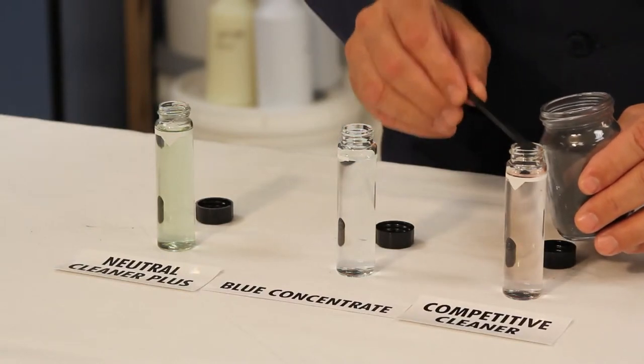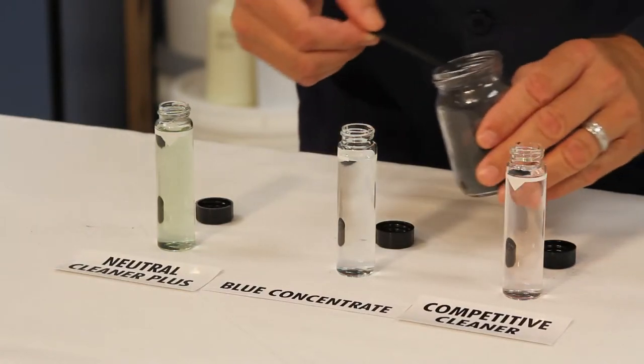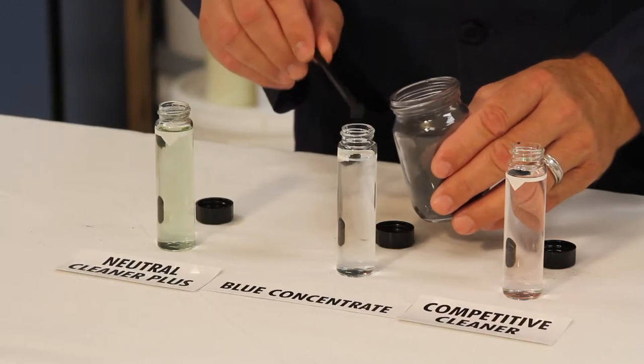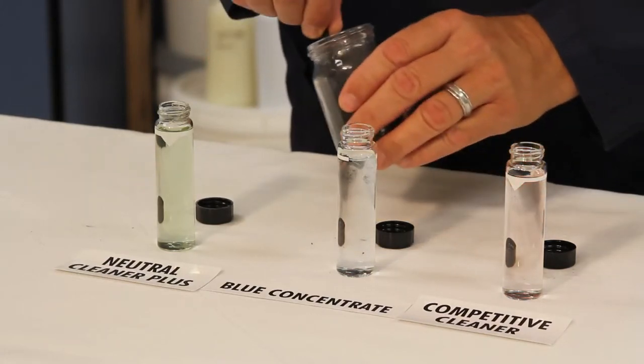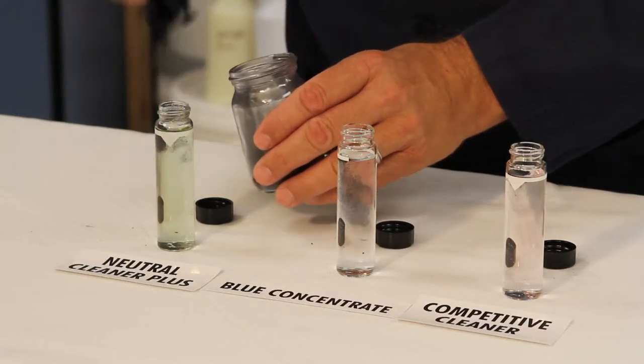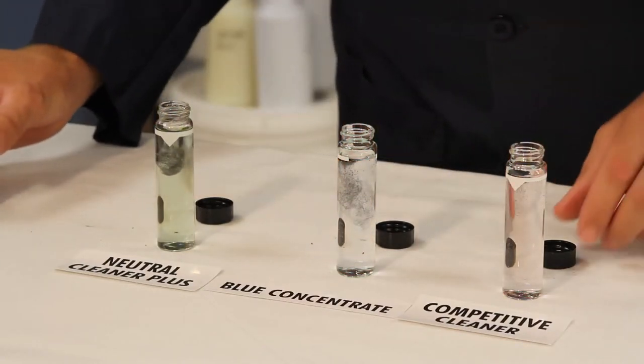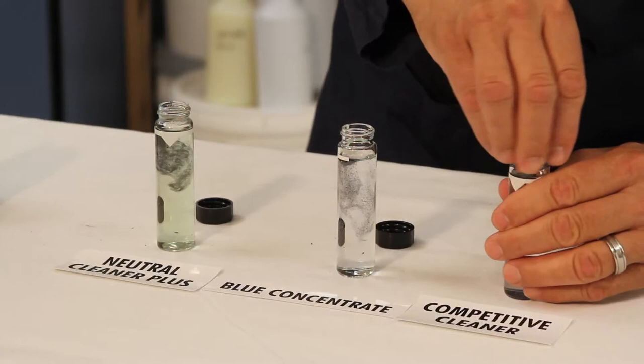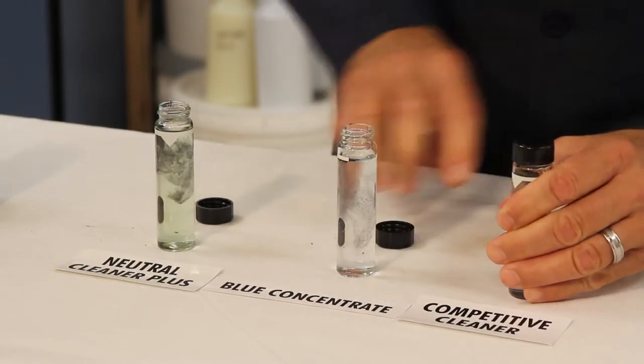If everything goes right when you shake up these vials it should be completely black, and what that signifies is that the surfactant that's in the vial is breaking down the dirt so that it wholly emulsifies. If the dirt is emulsified we can pick it up with a mop.